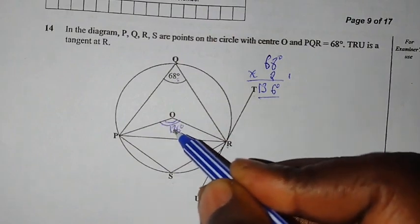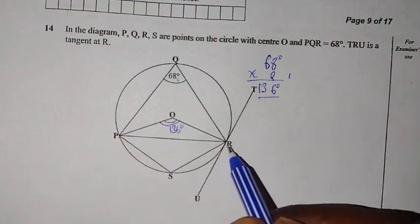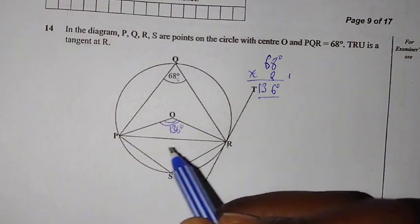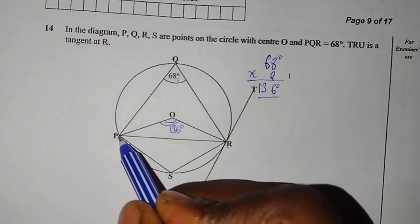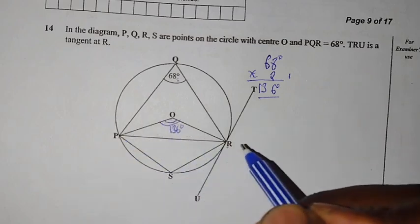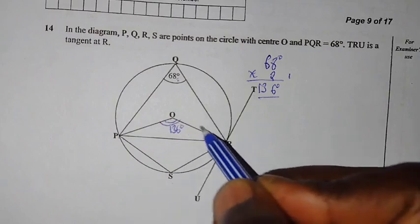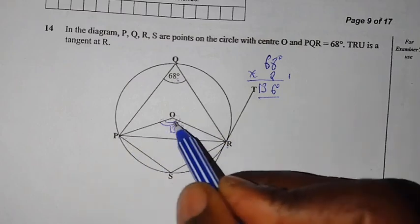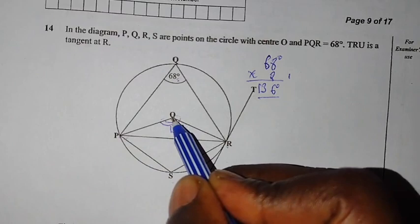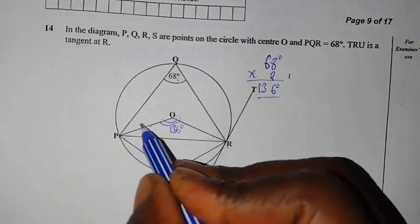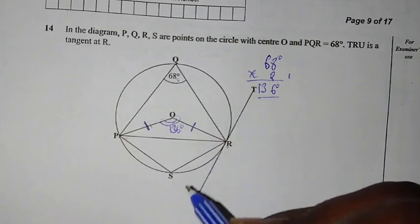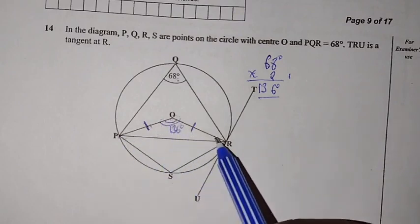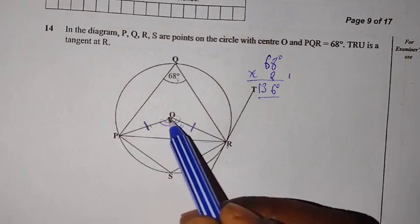After finding this angle right here, you can see that we have PR, which is the chord. Then from this chord, we also have the radius PO, then we also have another radius RO. So this radius and this radius, they are coming from the same chord and joining at the center. So this radius is equal to this radius. When you look at POR, what shape are we having? We are having a triangle.